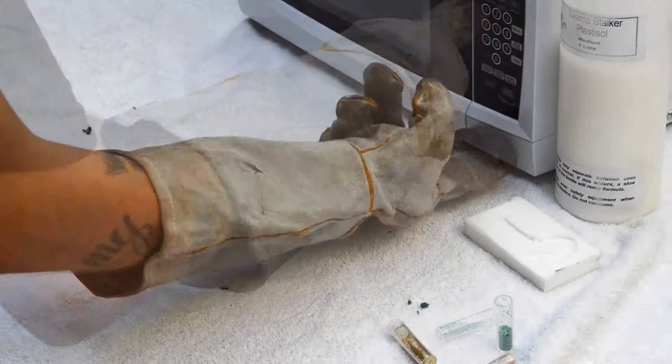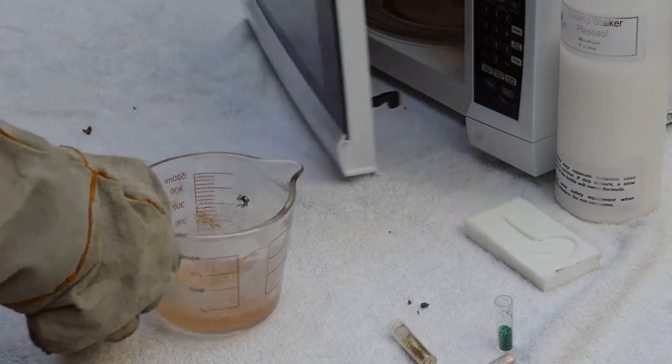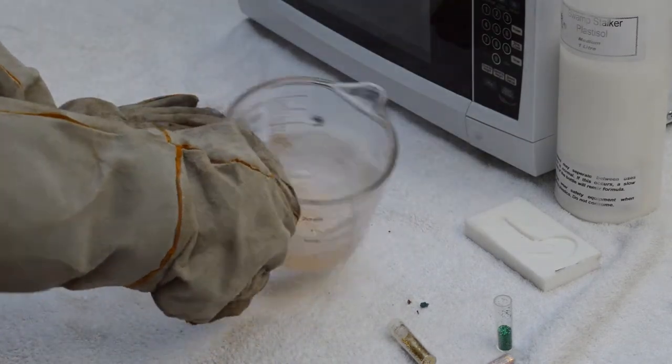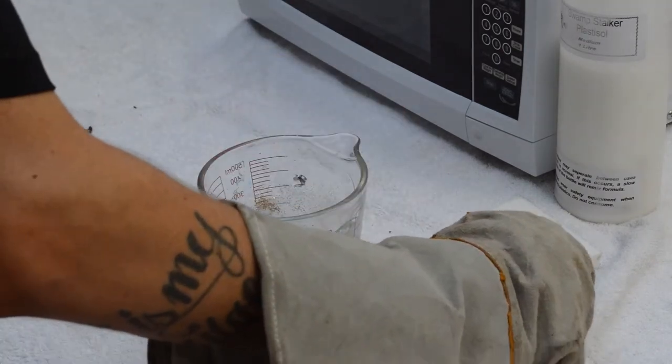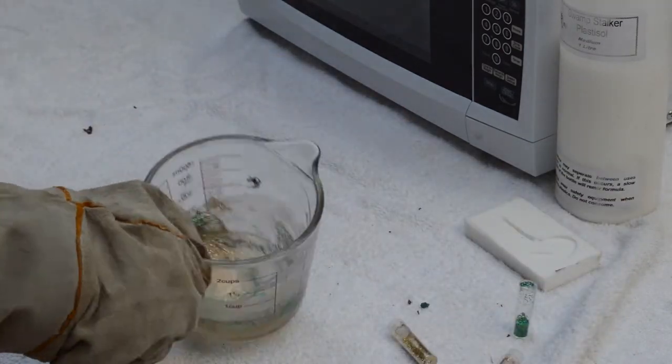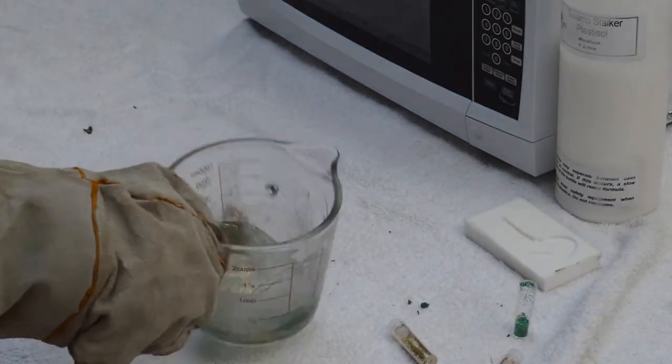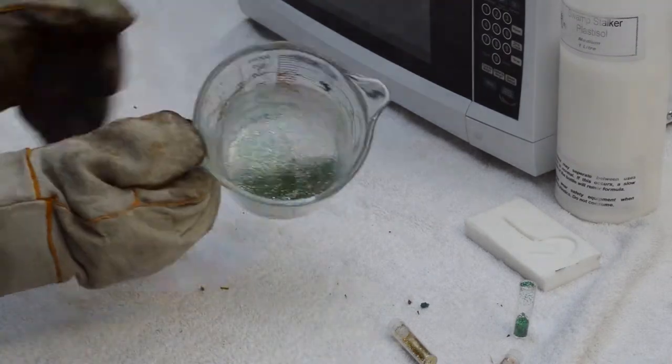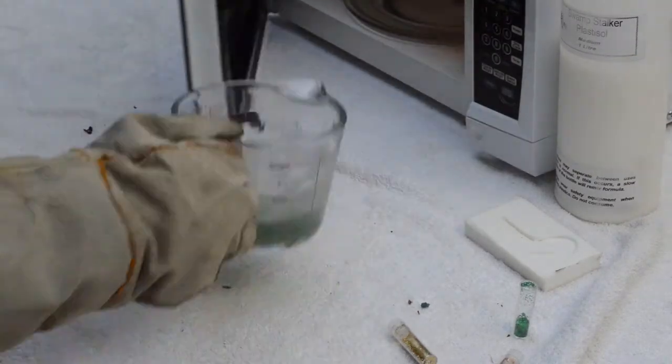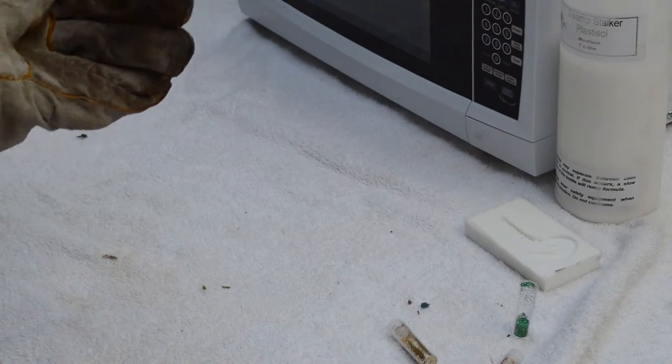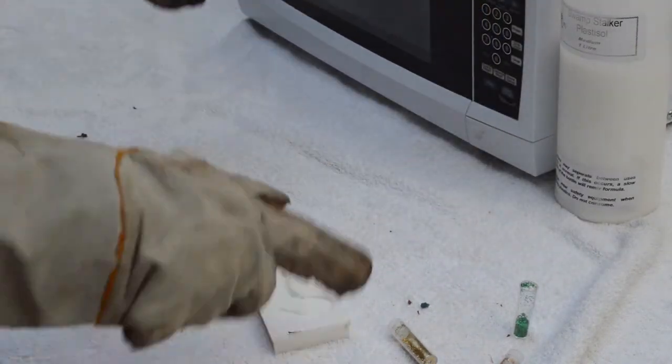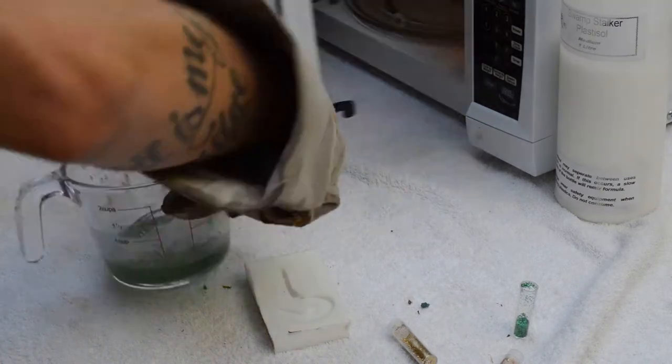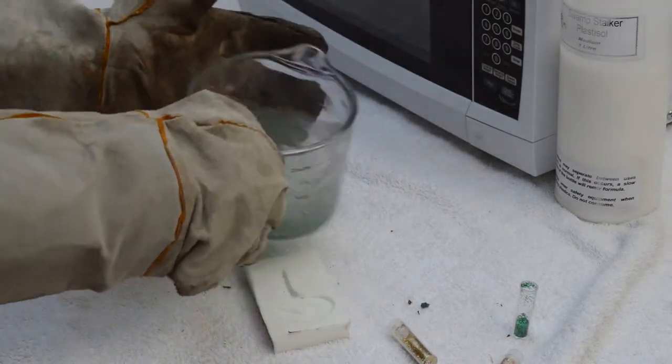Just remember that the Plastisol is extremely hot and extremely dangerous, so always take precautions and wear your safety equipment. Slowly pour the Plastisol into the mould. Now don't worry if you over spill it, you can always trim it up after the Plastisol has set with a pair of scissors.